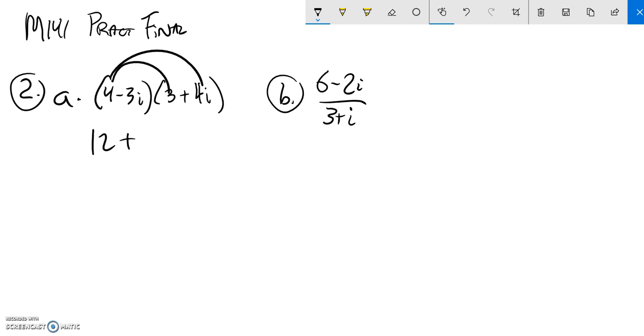So 12 plus 16i minus 9i, and then I have negative 3 times 4 is negative 12. i times i is i squared.